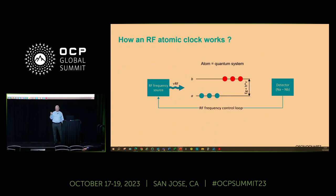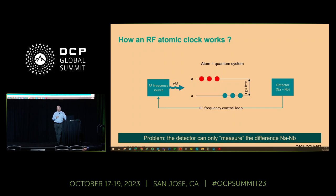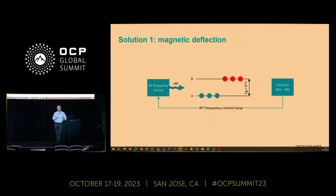Let's see how it works. You see here the two states mentioned before — a frequency source on one side and a detector on the other side, with two energy levels shown in blue and red. The problem is that the detector can only measure the difference between states A and B, but there is no difference.